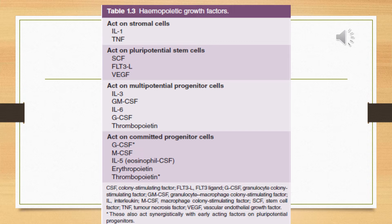Erythropoietin acts on those progenitor cells responsible for the production of erythrocytes. Thrombopoietin acts on progenitor cells responsible for the production of megakaryocytes. G-CSF acts on progenitor cells responsible for the production of granulocytes. Similarly, M-CSF acts on the progenitor cells of monocytes.